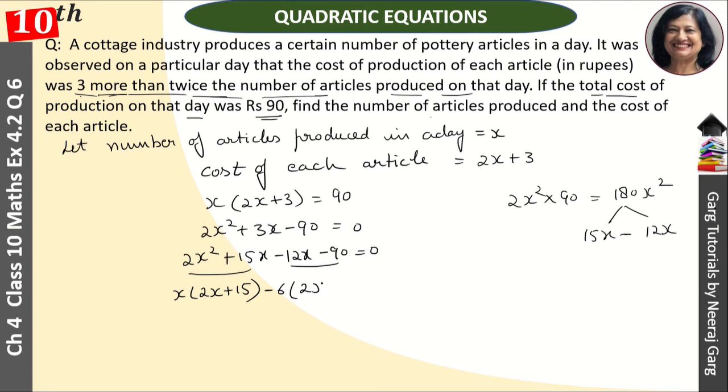Here we have 2x plus 15 is equal to 0. And then, x minus 6 is equal to our second bracket. Here we have x minus 6, so 2x plus 15 is equal to 0.